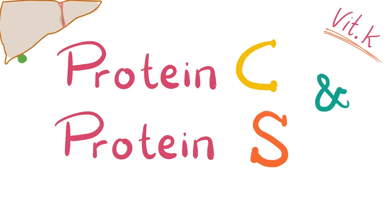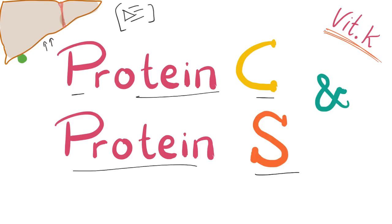Hey guys, it's Medicosis Perfectionellis and let's continue talking about bleeding and coagulation disorders. I produce playlists, so please subscribe and check my playlist called Bleeding and Coagulation Disorders. In the previous videos we talked about thrombomodulin, alpha-2 anti-plasmin, plasminogen activator inhibitors, D-dimer and others. Today we'll talk about protein C and protein S — vitamin K dependent factors that are important in stopping coagulation by inactivating factors 5 and 8.